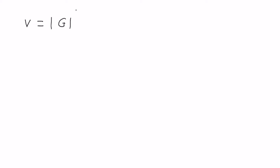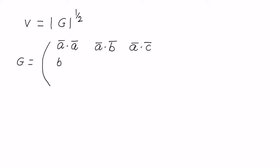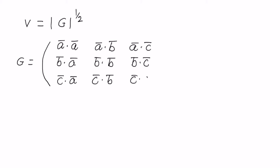In a previous video we saw that the volume of the unit cell is the square root of the determinant of the metric tensor. So we first need to find the determinant of the triclinic unit cell. In the video on metric tensor you have seen that the definition of the metric tensor involves the dot product between the basis vectors: a·a, a·b, a·c, b·a, b·b, b·c, c·a, c·b, c·c.